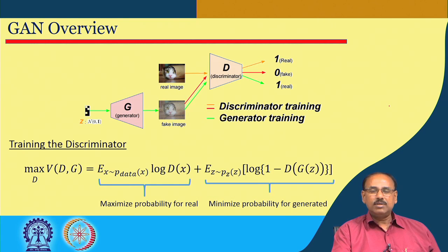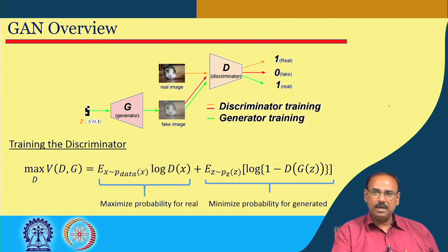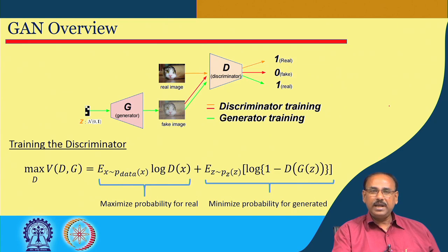There are two training components: training of the discriminator and training of the generator. For the discriminator, the cost function maximizes log D(x) + expectation of log(1 - D(G(z))), where G(z) is the data generated by the generator from latent variable z. Maximizing this trains the discriminator to assign high probability to real samples and low probability to generated samples.